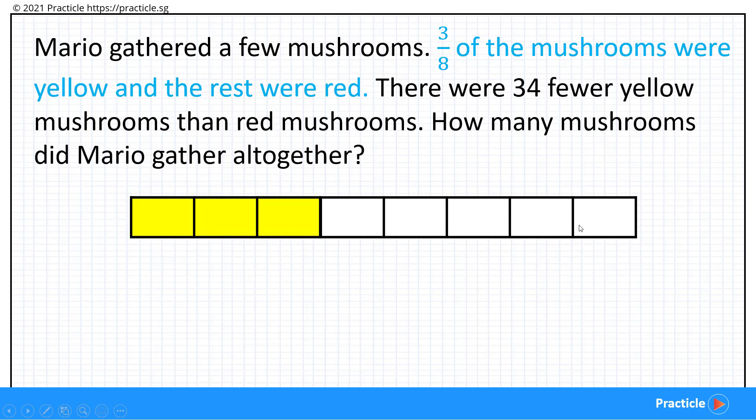And then what about the rest of the parts? Well, we are given that the rest were red, right? And this means that we have 1, 2, 3, 4, 5 parts to represent the red mushrooms. Following so far?